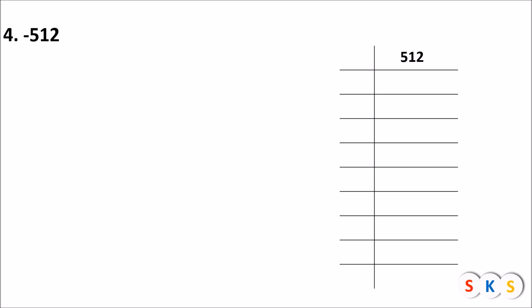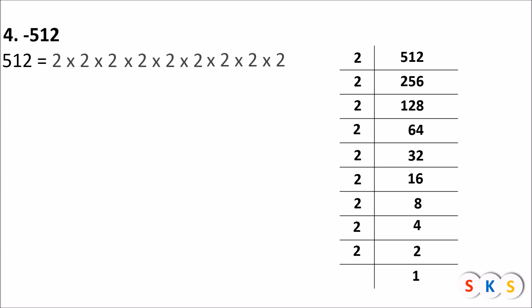Next question: −512. First we ignore the negative sign and find the cube root of 512. We find the prime factors of 512 by dividing repeatedly by 2: 512 → 256 → 128 → 64 → 32 → 16 → 8 → 4 → 2 → 1. So 512 can be written as 2 multiplied 9 times.